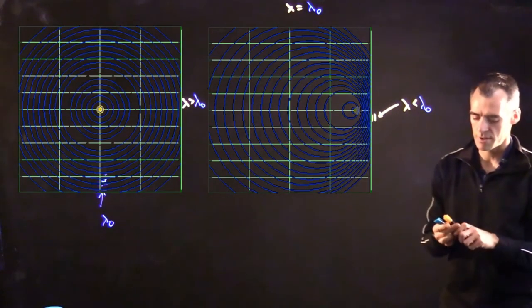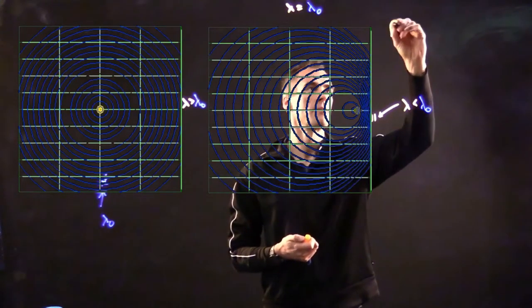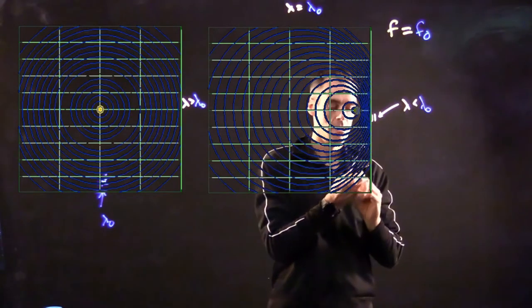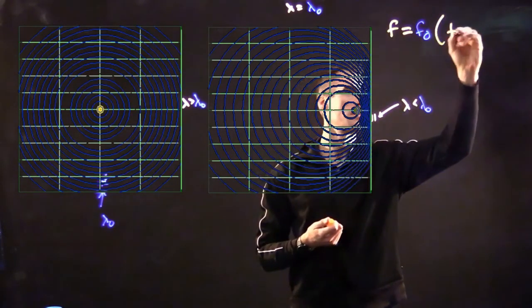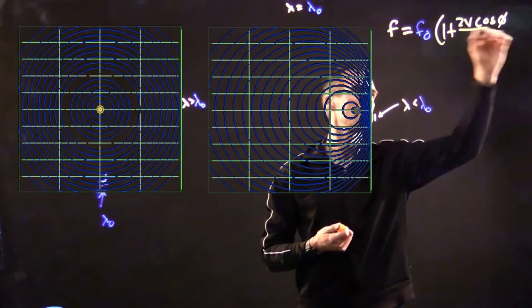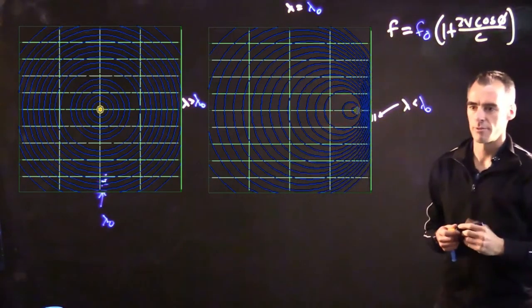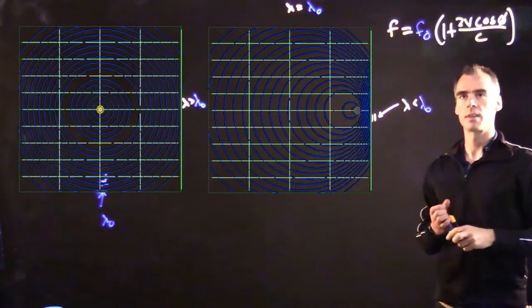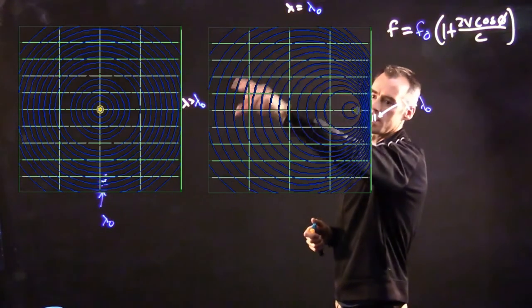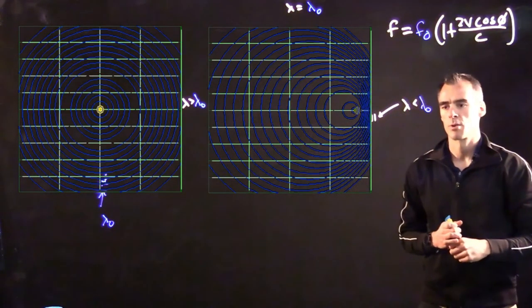And so let me just go ahead and throw this equation up there and kind of ruin the whole surprise for you. So our new frequency, F, is going to equal F naught, which is our initial frequency, times 1, plus V cosine theta, 2V cosine theta, over C. I've got the 2 in here in this case, because if we're thinking of radar, and that theta is going to correspond to this different angle that the object's moving, but we'll talk more about that in the next video.